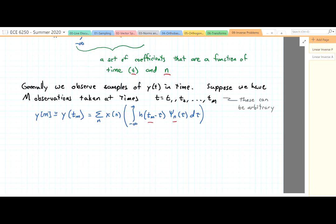So now we have y(m) is equal to sum over n, A_mn x(n). And our A_mn basically comes from that integral above, is equal to h(t_m - τ)ψ_n(τ)dτ.